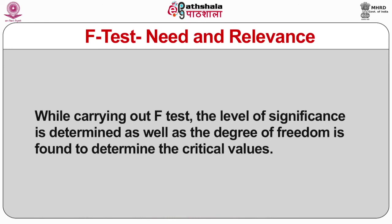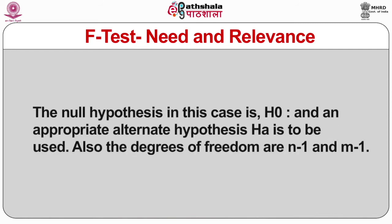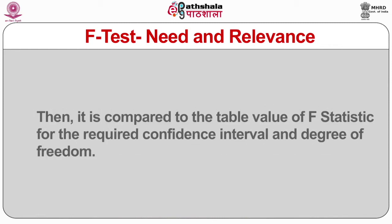While carrying out an F-Test, the level of significance is determined and the degree of freedom is found to determine the critical values. The null hypothesis in this case is H0 and an appropriate alternate hypothesis is to be used. The degrees of freedom are n minus 1 and m minus 1. It is then compared to the tabulated value of F-statistics for the required confidence interval and degree of freedom.